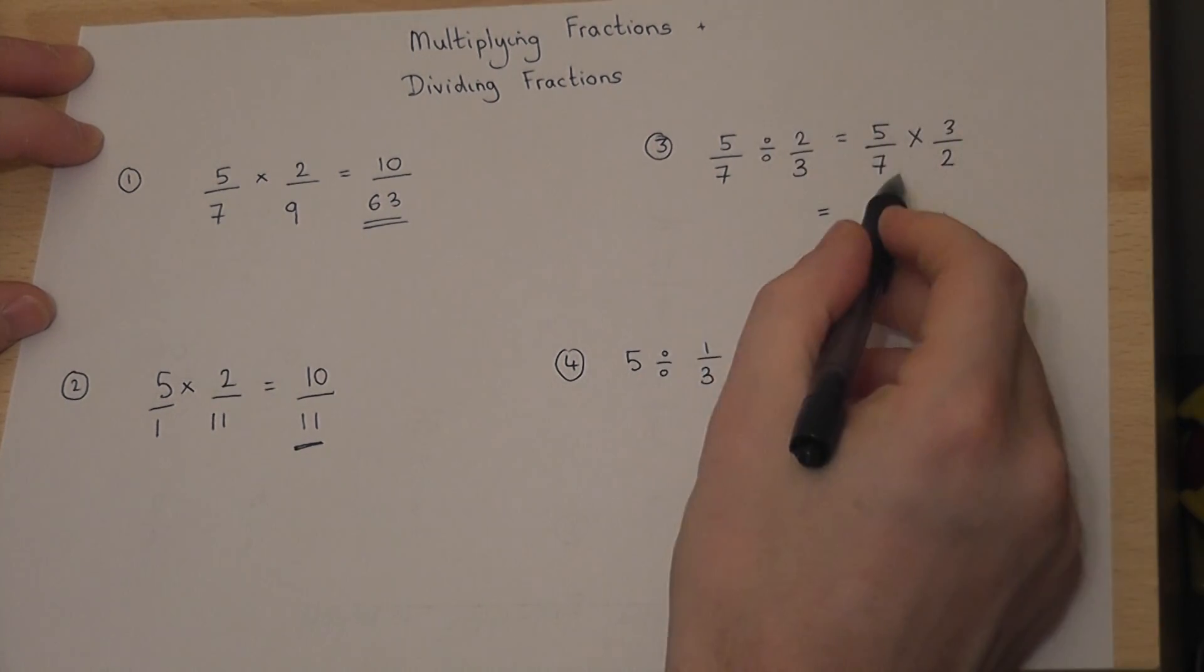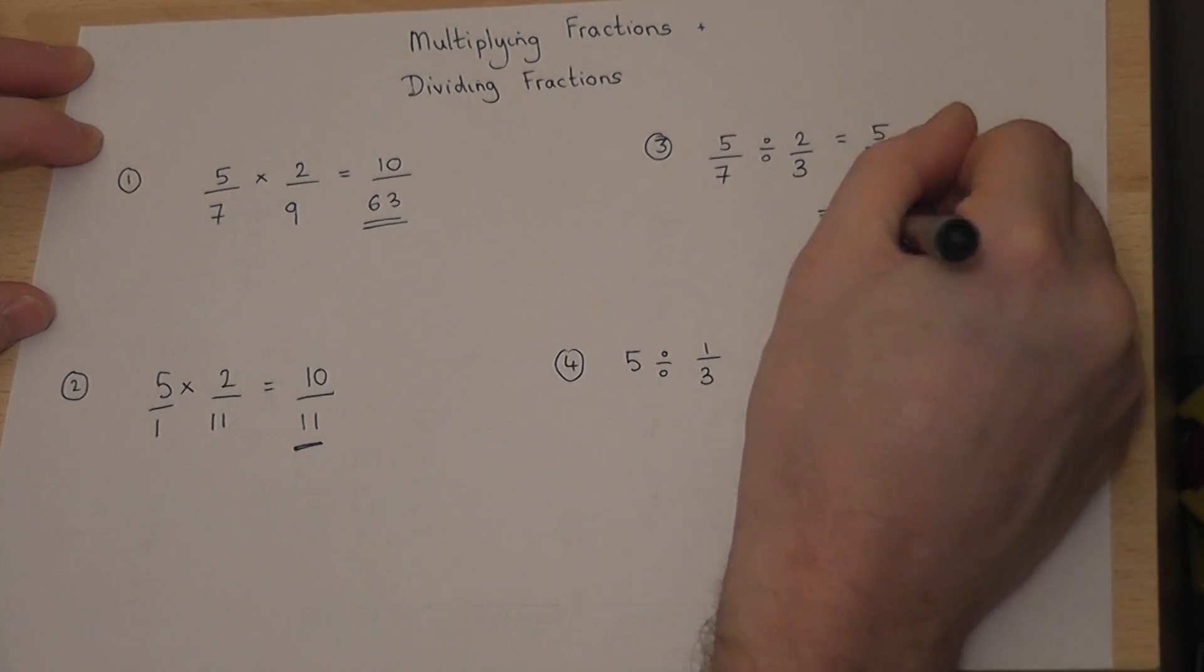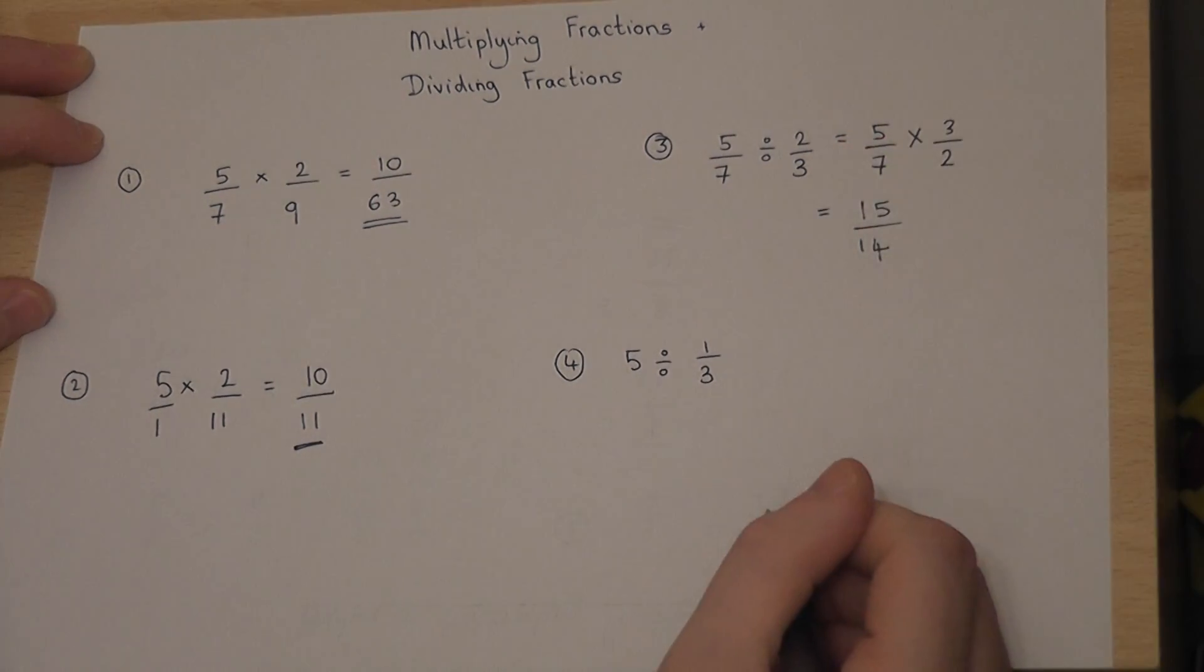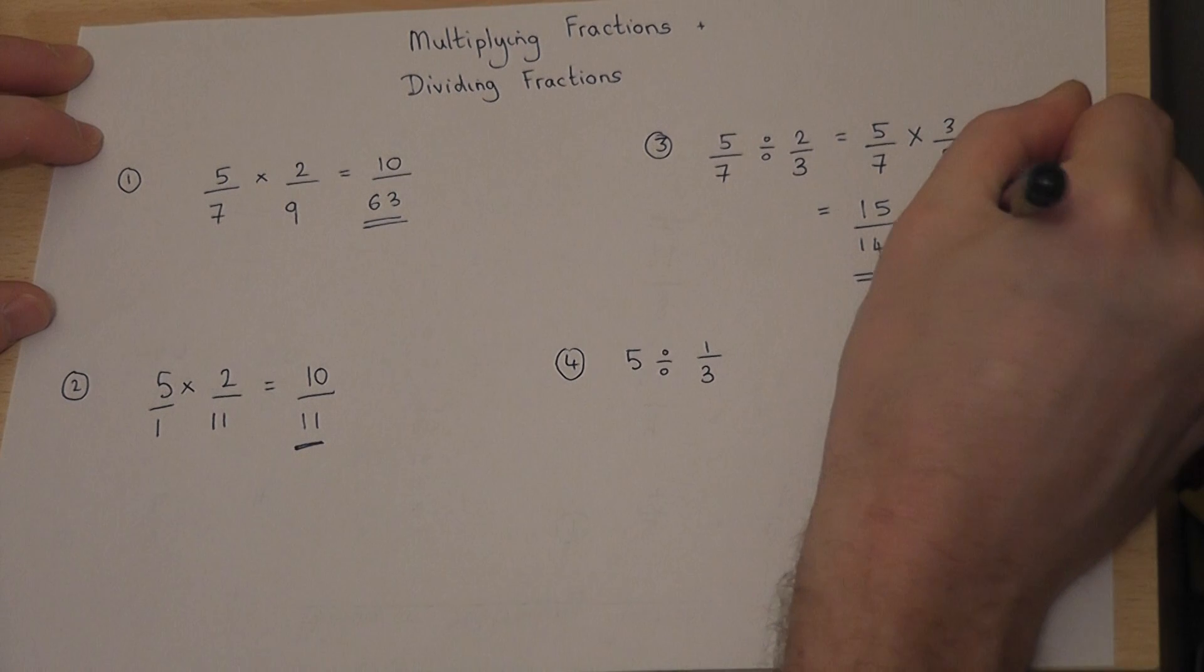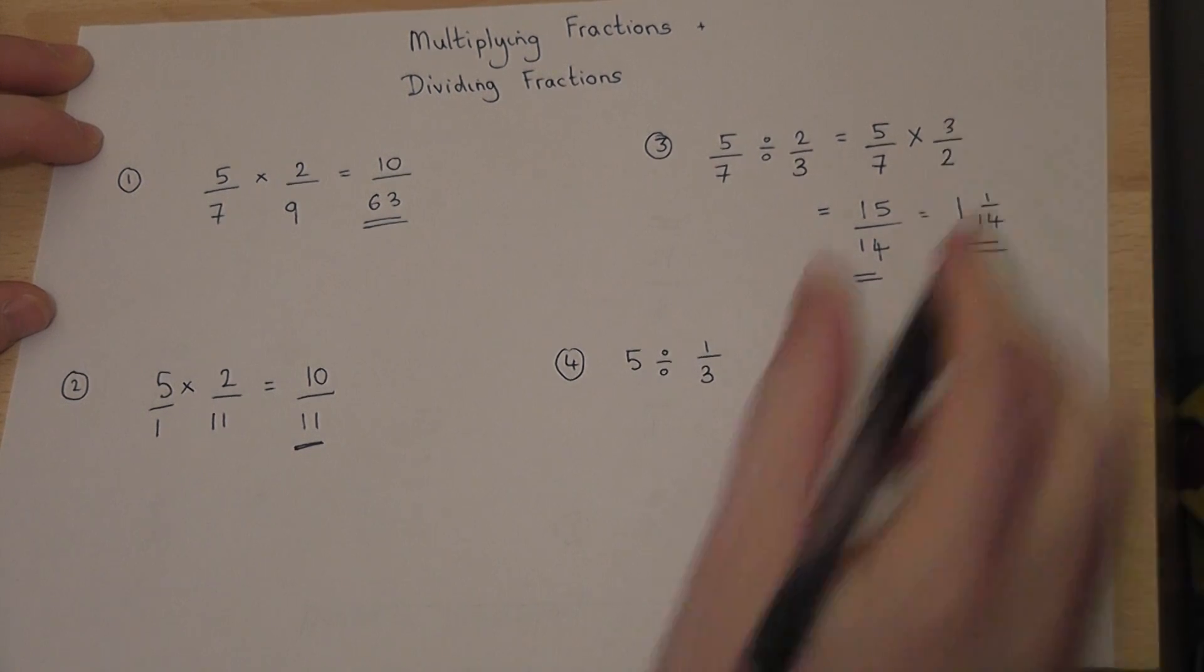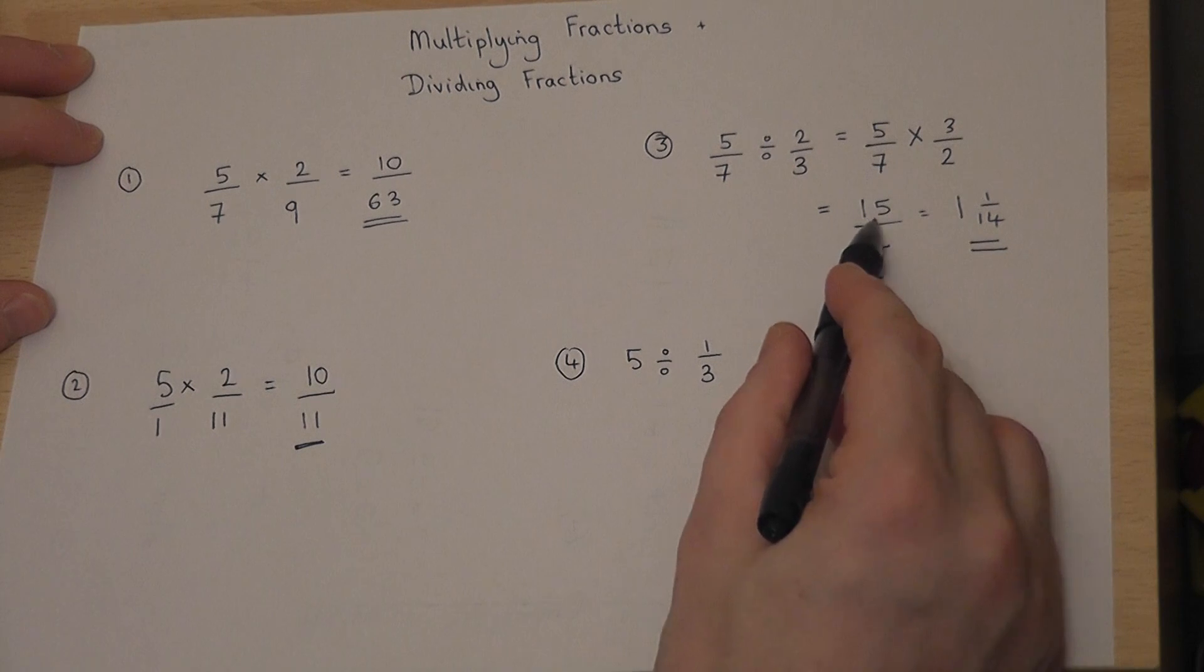We then use our previous mathematics. 5 times 3 is 15, 2 times 7 is 14, which we could also write as 1 and 1/14th. Because there's 1 14 in 15, remainder 1.